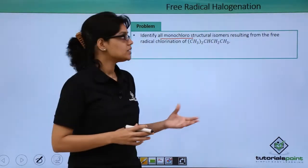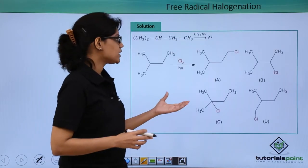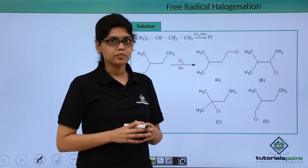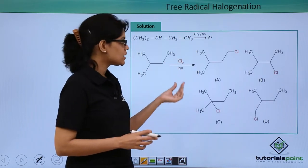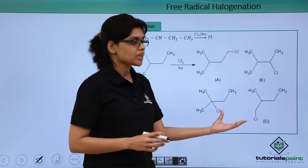We can see that when this reaction is carried out, we end up essentially getting four different products. Chlorine can add to any of these carbon atoms and result in a mixture of products here.